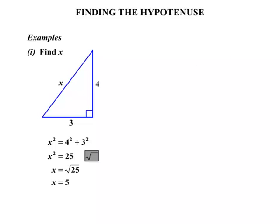The second example, we're asked to find m. Again we have a right-angled triangle, and m is the longest side. It's known as the hypotenuse. So we start with that.